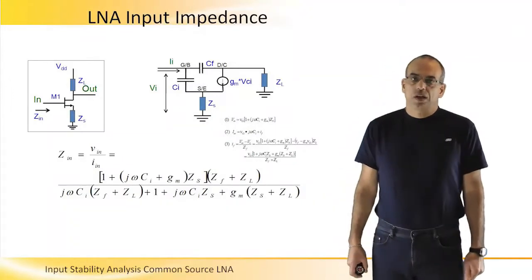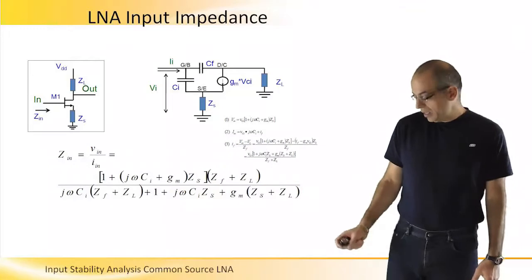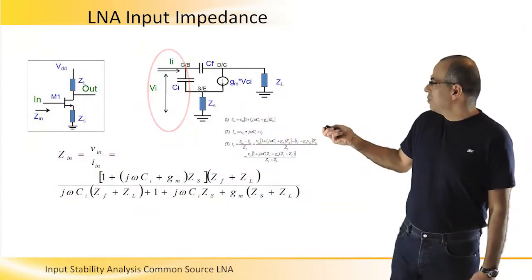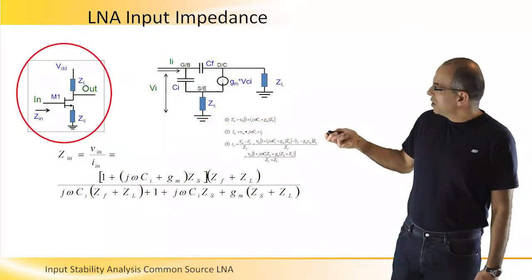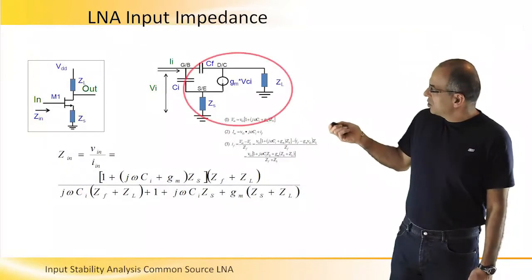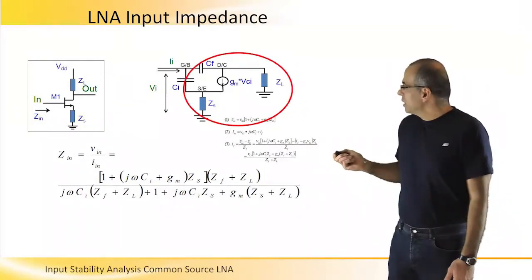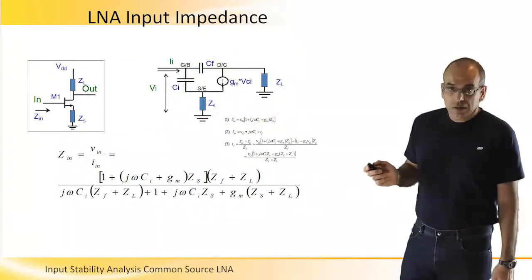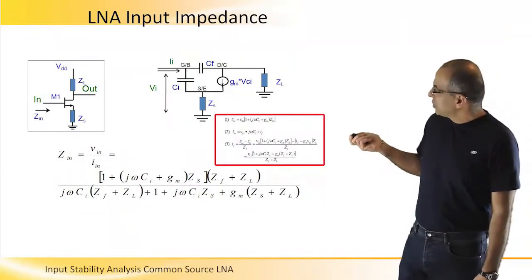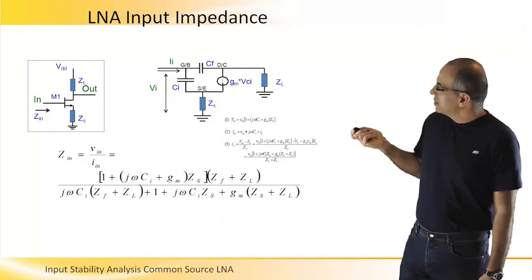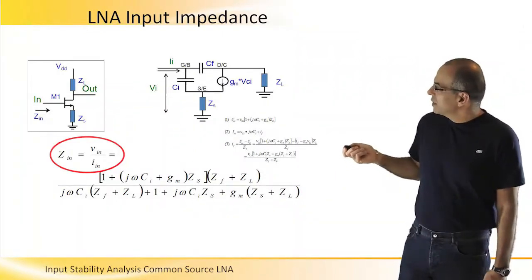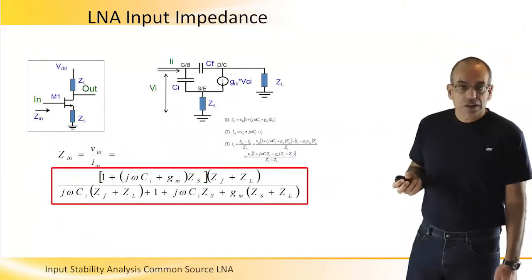Analyzing LNA stability, we can look at the input impedance and treat the input here as the node where we look at the active part of the LNA. The frequency-determining part, mentioned before when we talked about the negative resistance model, will be the input match. Looking at the active part, we can use simple Kirchhoff's laws to find ZIN as VIN divided by IIN, and we find that ZIN equals the expression shown here.